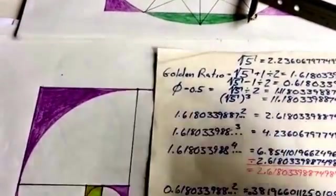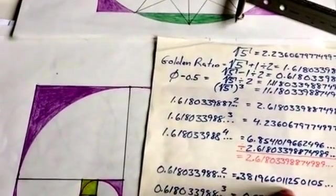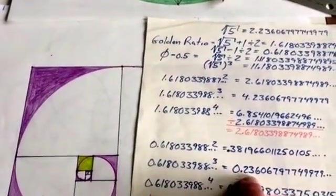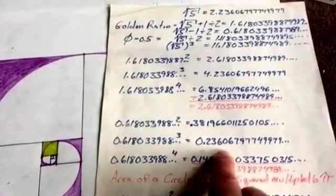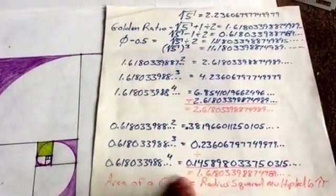Now we're down to 0.3819 when we square that. Now, if we cube that, we got 2.23, the square root of 5 divided by 10.